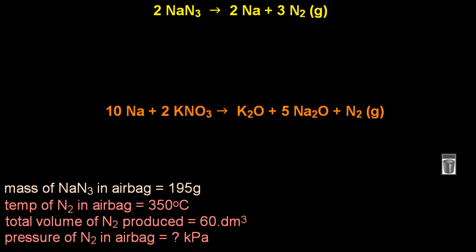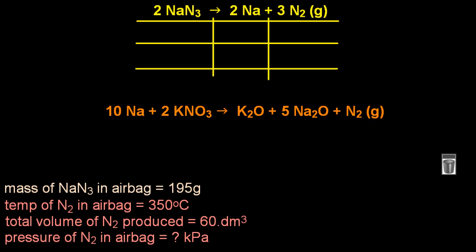All right, tidy it up a bit. And let's do the boxes for stoichiometry. This is where you tell me that your teacher uses the factor label method. And good luck with that. I much prefer the boxes. All right, moles, mass, molar mass. Mass is 195 from the question, and the molar mass is 65.